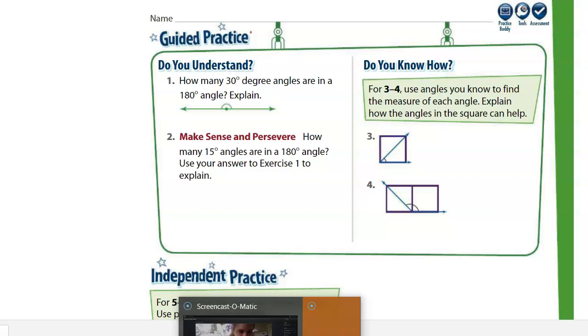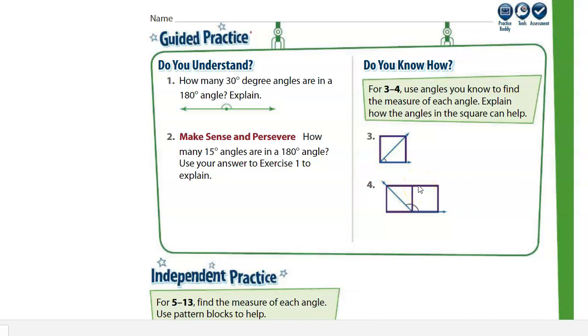For the last two problems, number 3 and number 4, we're gonna use our knowledge about right angles to find how big these angles are. For number three, we see that the angle shown is half of a right angle. Remember, a right angle is 90 degrees, so half of 90 degrees is 45, therefore this angle is 45 degrees. To find half of 90, we divide 90 by 2, and that's how we can get 45.